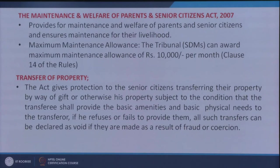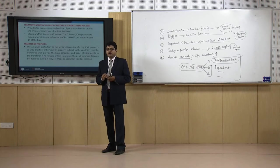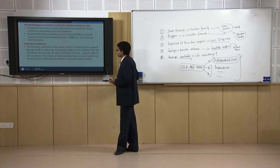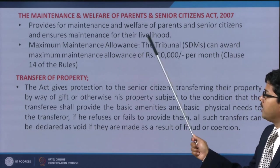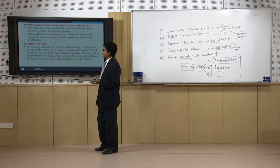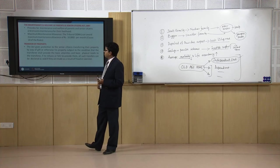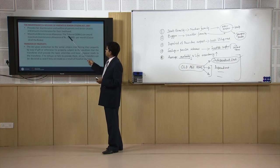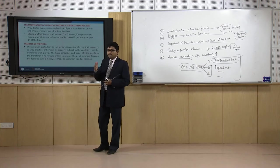The act is called the Maintenance and Welfare of Parents and Senior Citizens Act 2007. This is a very important act whose objective is to ensure the rights and basic needs of old age people from their family or from society. This act provides for maintenance and welfare of parents and senior citizens and ensures maintenance of their livelihood — combining both the shelter component and the livelihood component.